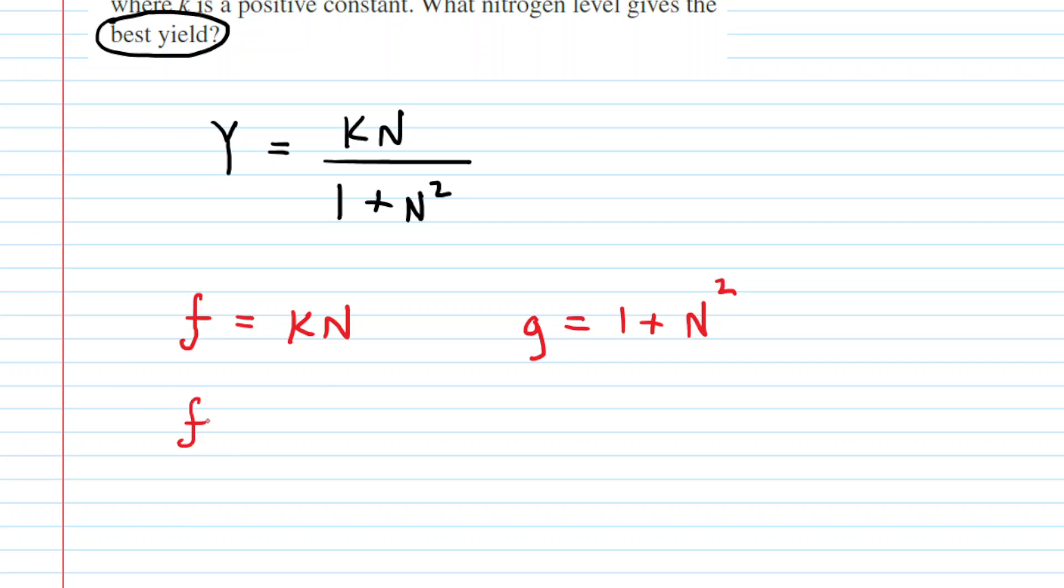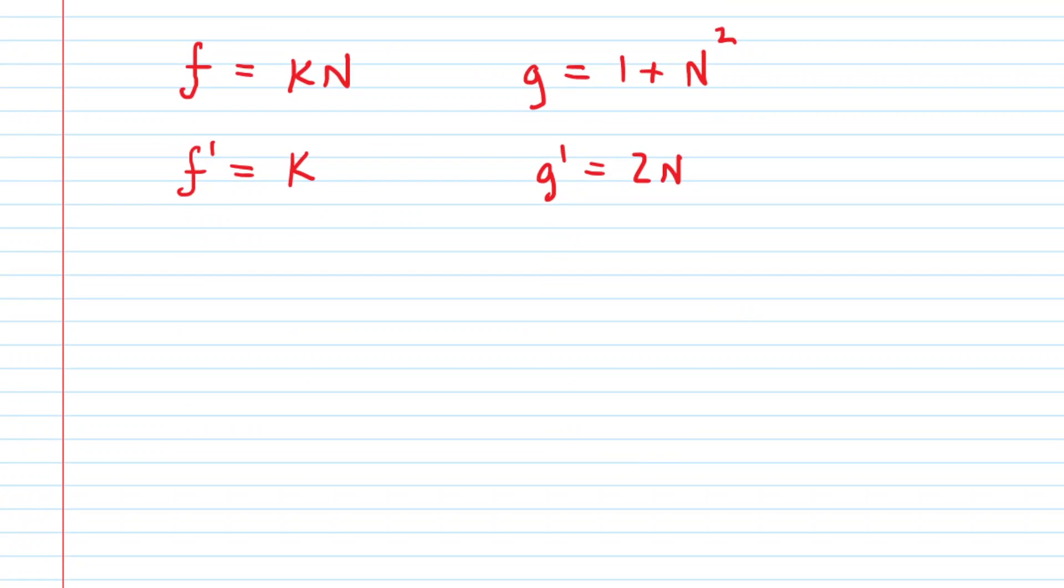Next, you need the derivatives of these functions. Remember, your variable is N. k is a constant. So the derivative of kN would just be k. The derivative of 1 plus N squared would be 0 plus 2N. These are the four components we need for our quotient rule. The formula is what I call f'g minus gf' all divided by g squared. We're going to plug in the four components into that equation to get the derivative.